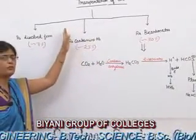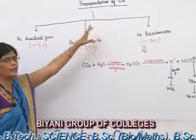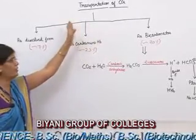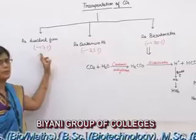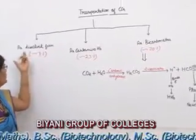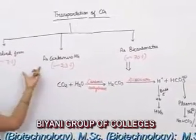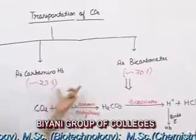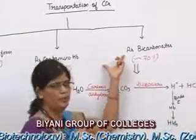Oxidation of food generates carbon dioxide, and this carbon dioxide transports in our body in three forms: first, as dissolved form; next, as carbaminohemoglobin; and as bicarbonates.